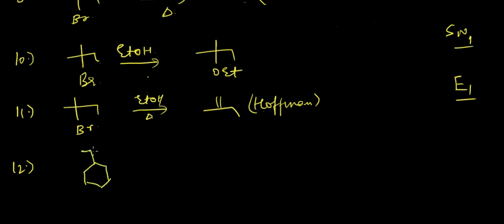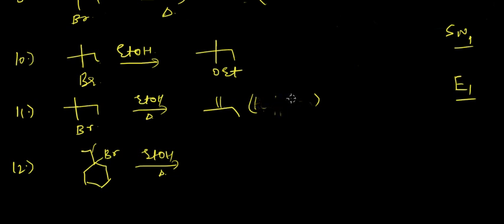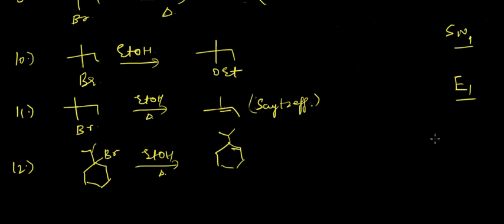Looking at another compound passed through EtOH with heating: there will be a carbocation formation, and despite initial thinking, there is no steric hindrance in this case. A double bond forms and we get the elimination product — again an E1 mechanism.